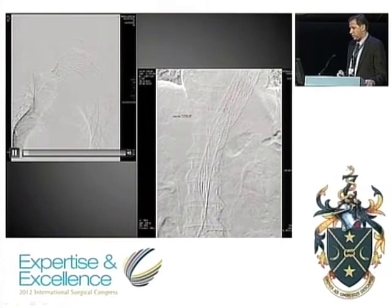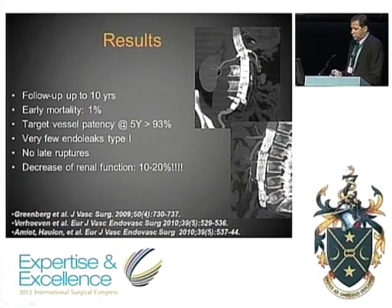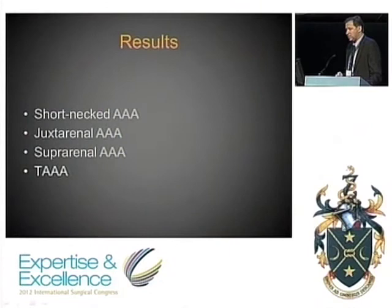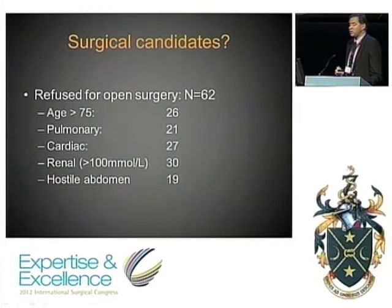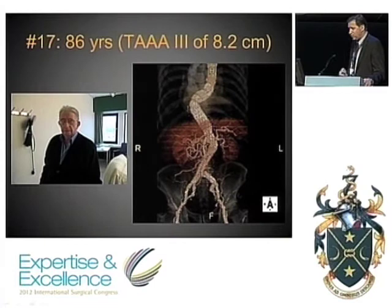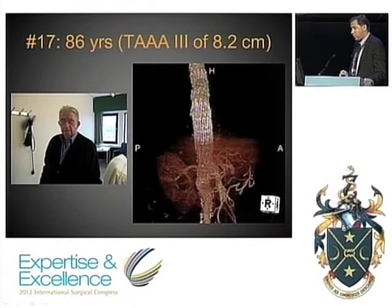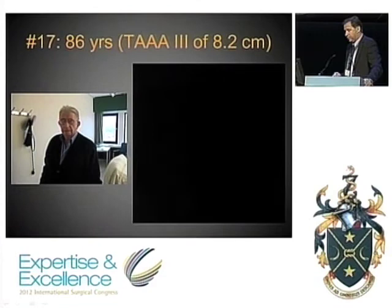Looking at results: taking all complex abdominal aneurysms together, the results have been excellent and reproducible. These results come from large expert centers, but many teams have tried it and, if they stick to their limitations, can also present very good results. Thoracoabdominal aneurysms are a completely different category — more than half of our patients were refused for open surgery. One example: a very fit but elderly gentleman with an 8 cm aneurysm treated with this approach, previously having had open abdominal surgery. He is now 91 years old and still doing very well.